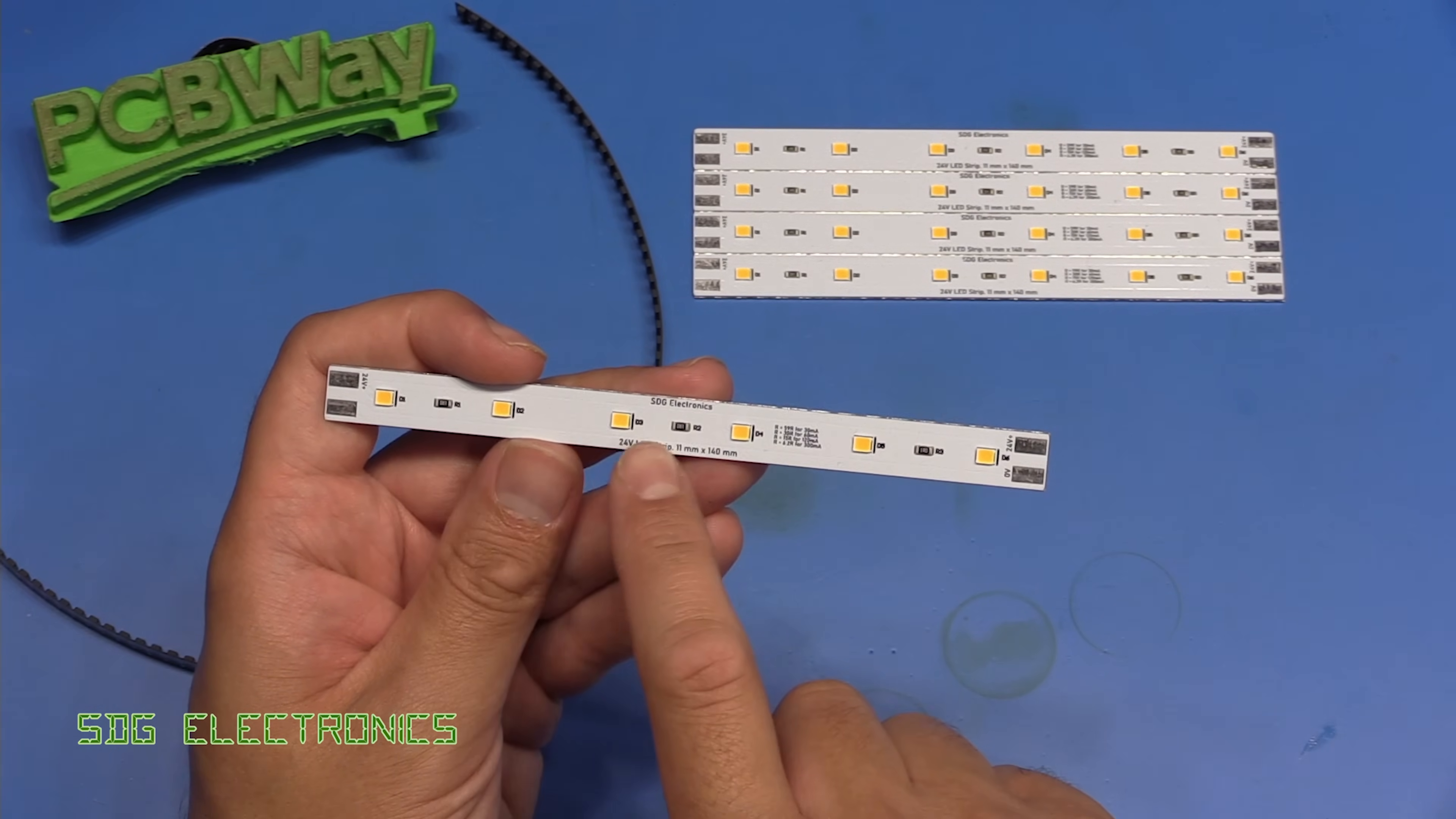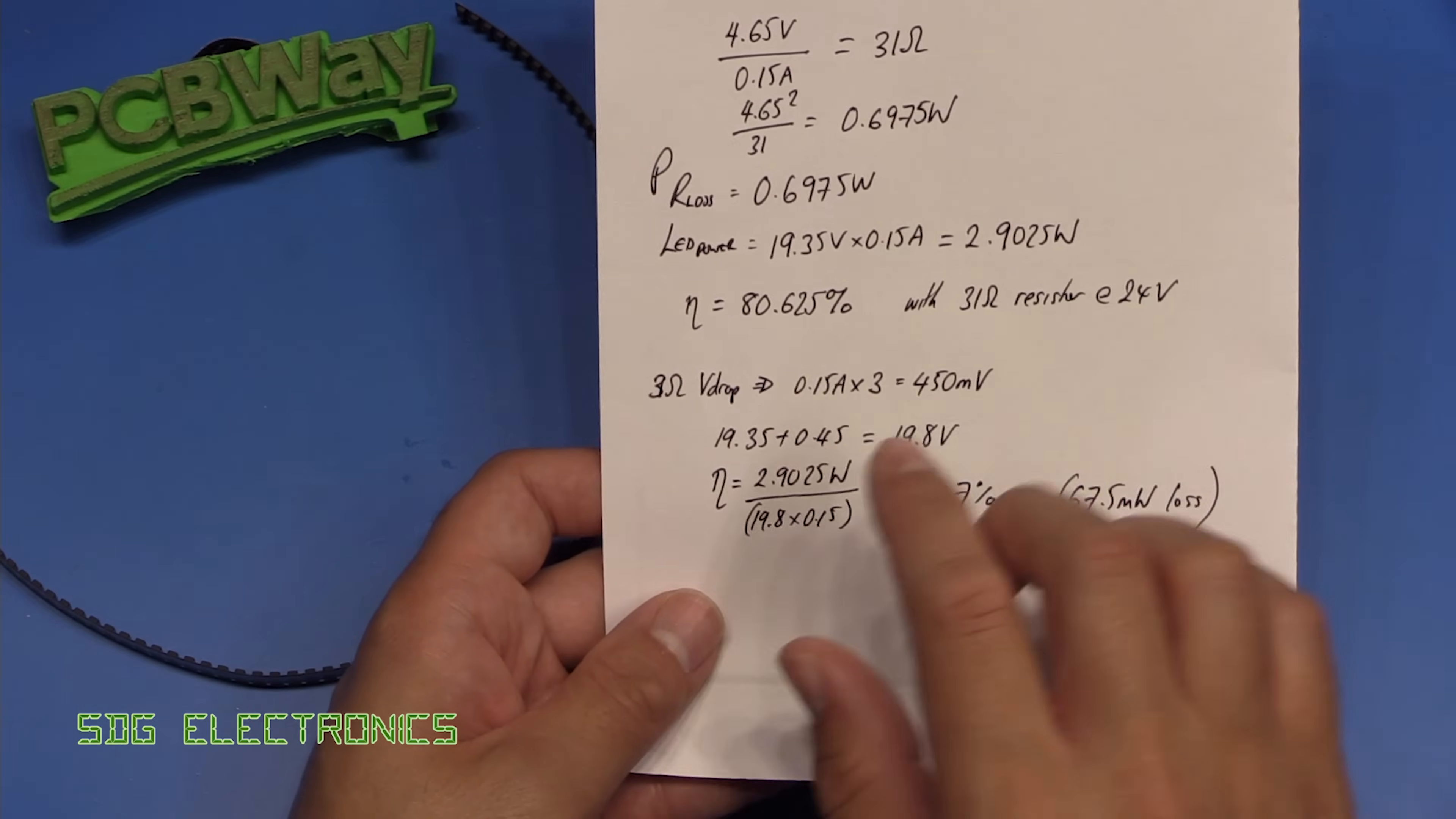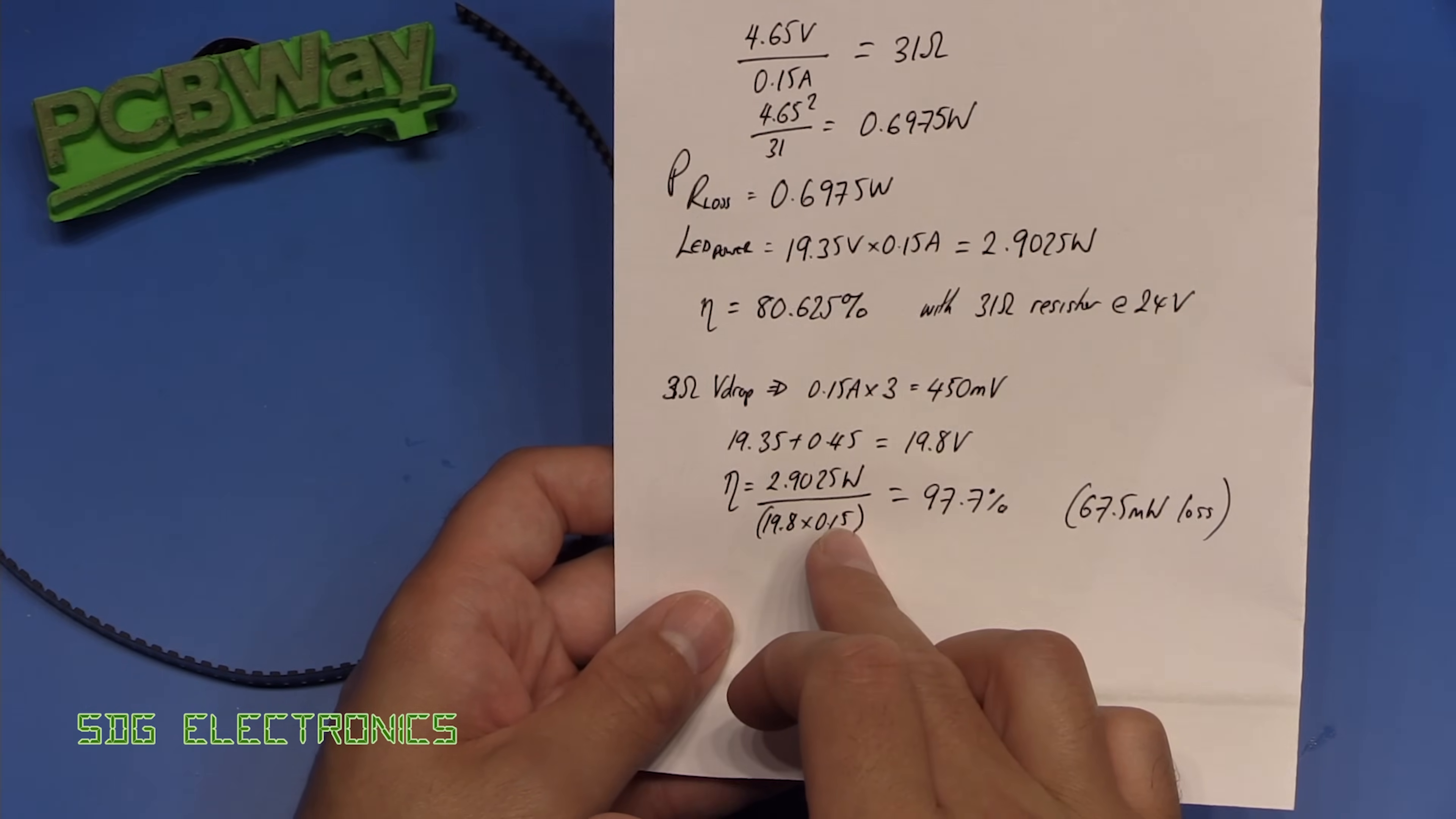We went with on the PCB just some low resistance resistors. We've got 1 ohm each, 3 ohms in total. In that video we had a look at some of the calculations and with that 3 ohms of voltage drop we basically drive the LED strips at 19.8 volts and that allows us to drive them at 150 milliamps.